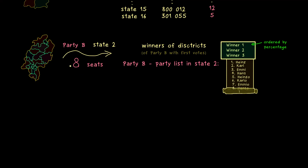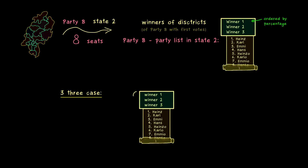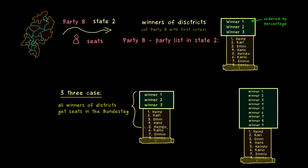In this example we can allocate the 8 seats, and essentially 3 cases can happen. In the best case, all the winners of districts get seats in the Bundestag, and also the first people on the party list in the state get some seats as well. However, if too many people from your party win a district, the percentage matters — the worst winners measured by percentage in the district will not get a seat, because there are simply not enough seats for the party. In that case, the state party list is also not touched.